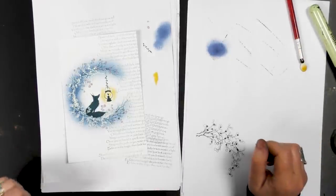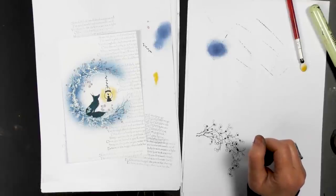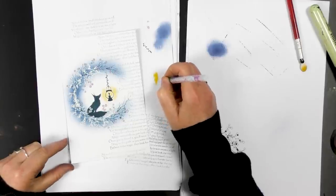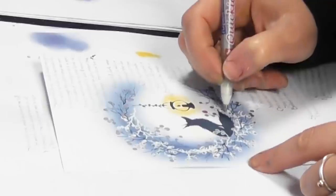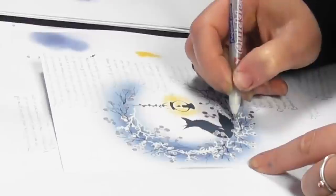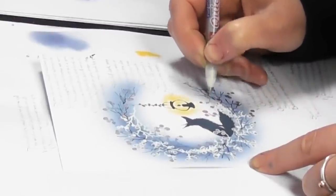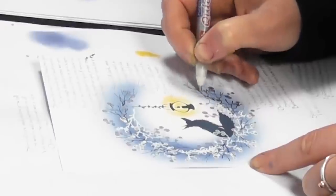And then finally I think we will add a little bit of glitter. So I've got my glue pen and all I'm going to do is just dot in and around the wreath.